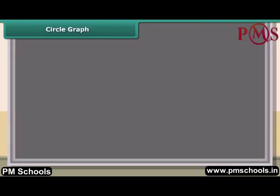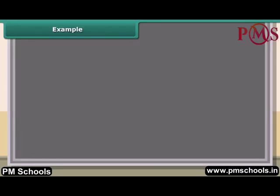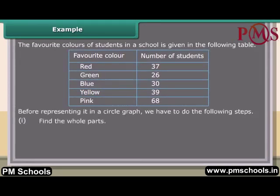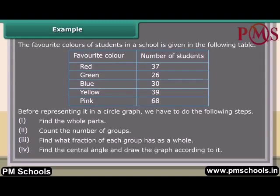Circle graph. A circle graph is divided into pieces, each displaying the size of some related piece of information. Circle graphs are used to display the sizes of parts that make up some whole. Circle graphs are also known as pie graphs. Example 1: The favorite colors of students in a school are given in the following table. Before representing it in a circle graph, we follow these steps: find the whole parts, count the number of groups, find what fraction each group has as a whole, and find the central angle and draw the graph according to it.